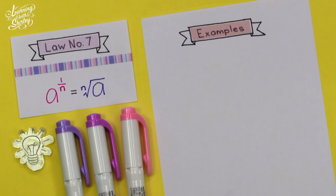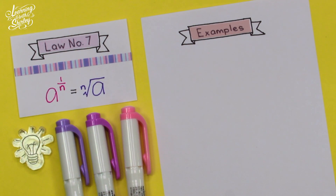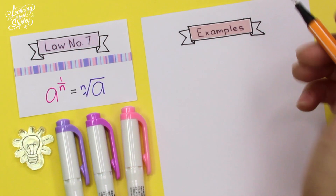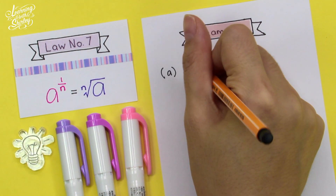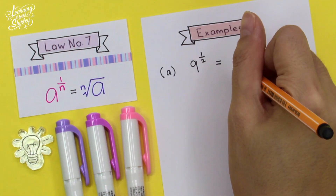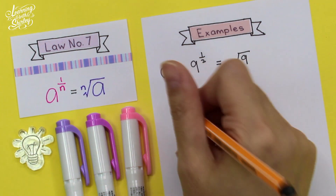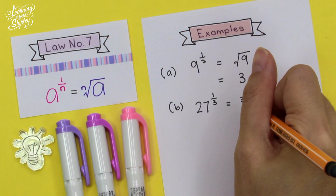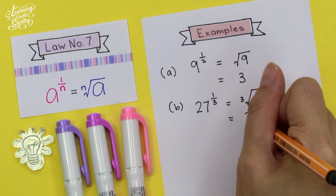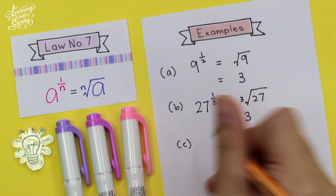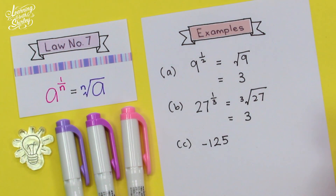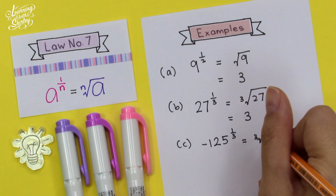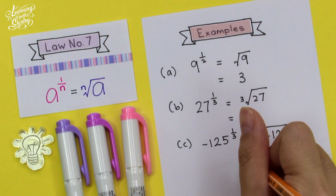For law number 7: if the index of a number is a fraction, it is known as a fractional index. It can be expressed as a to the power 1 over n equals the nth root of a. For example, 9 to the power of half equals the square root of 9, which is 3. And 27 to the power of 1 over 3 equals the cube root of 27, which is 3. Negative 125 to the power of 1 over 3 equals the cube root of negative 125, which equals negative 5.